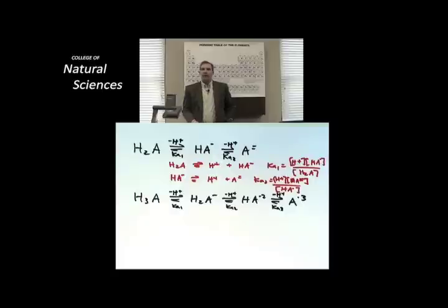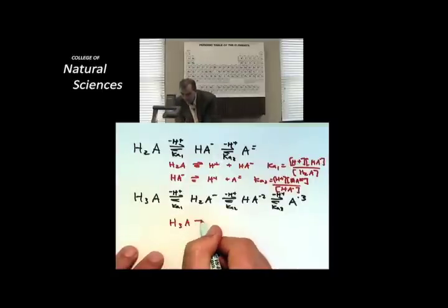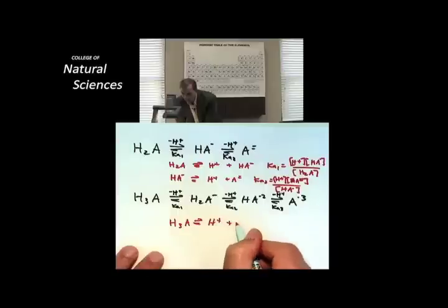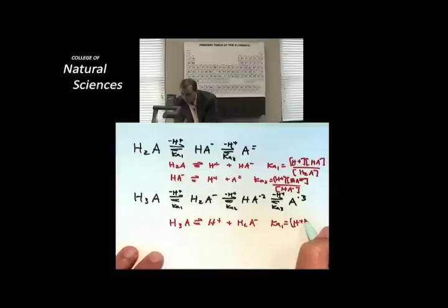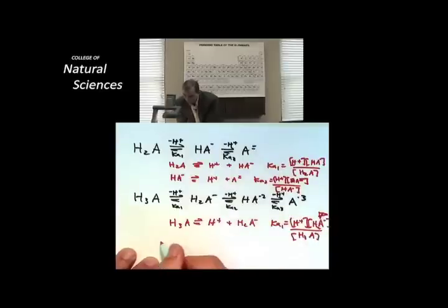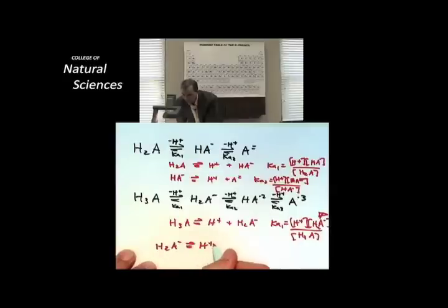Let's do the H3A cases. Here's H3A losing a proton to make H2A- with a KA1, which is the proton times the H2A- over H3A. That guy right there goes on to do a second step of dissociation. H2A- goes to make H+, plus HA2-. KA2 is equal to the stuff on the right over the stuff on the left.